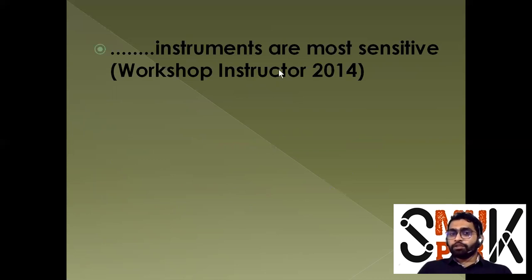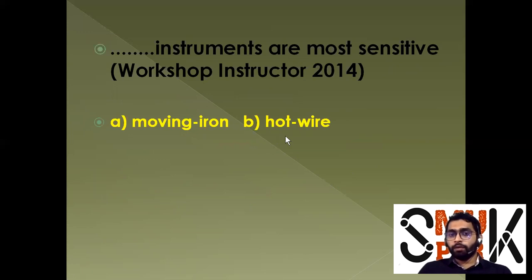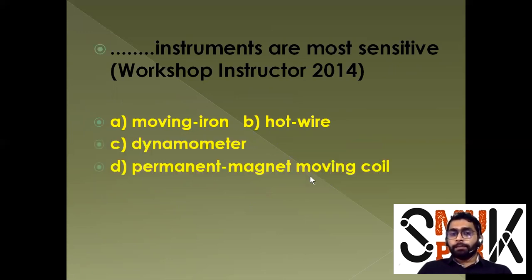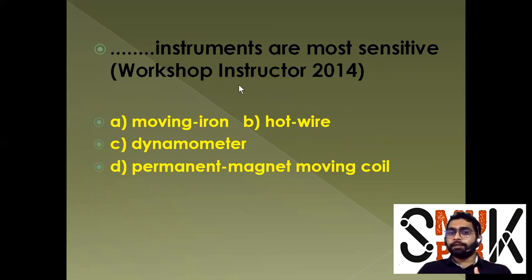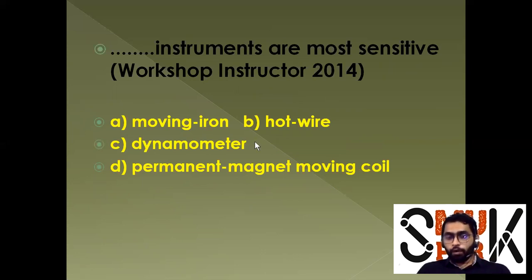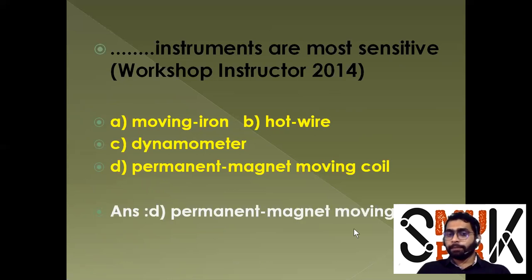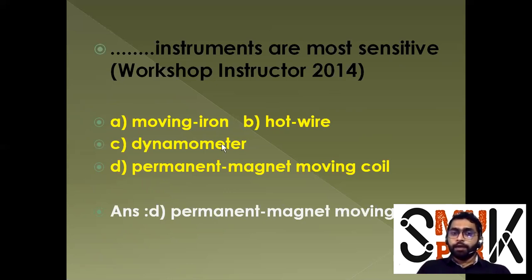Which instrument is most sensitive? Options include: moving coil, moving iron, board wire, and dynamometer — meaning permanent magnet moving coil (PMMC). Sensitivity is defined by the torque-to-weight ratio. The most sensitive instrument is PMMC, and the least sensitive is the dynamometer. Option D — PMMC — is the correct answer.